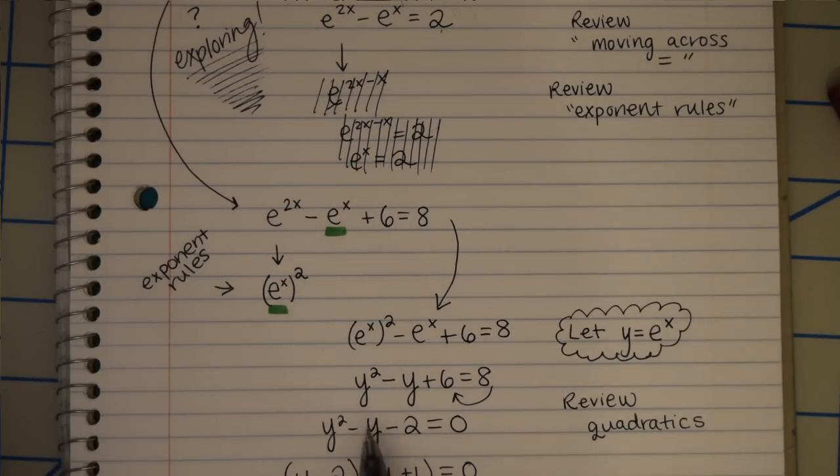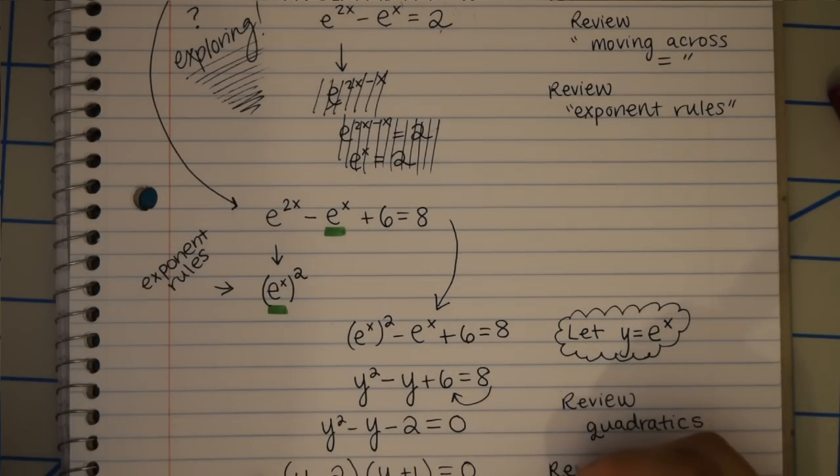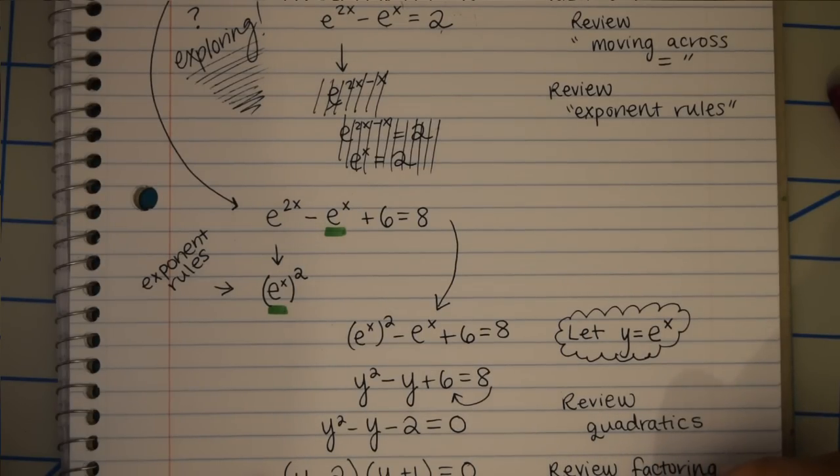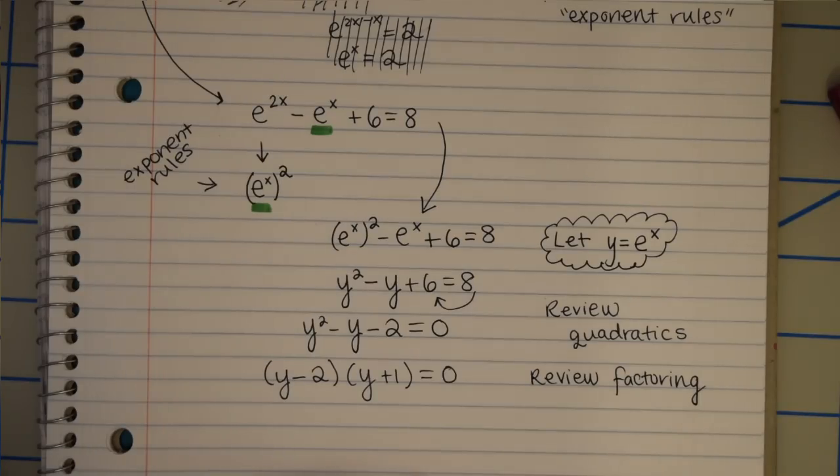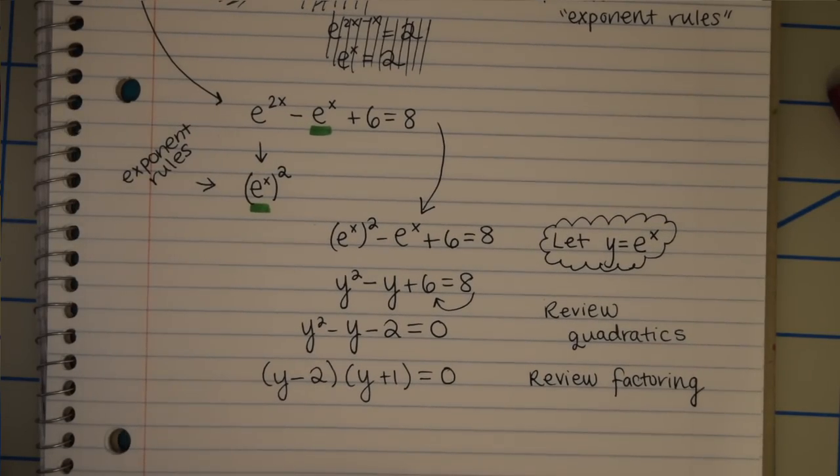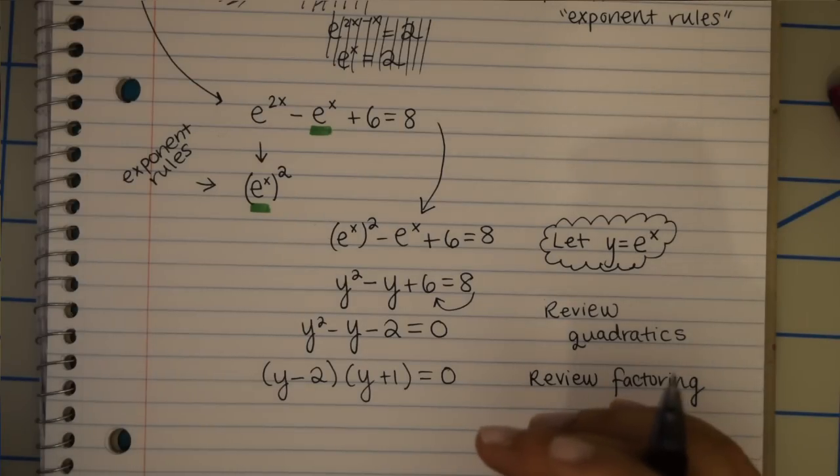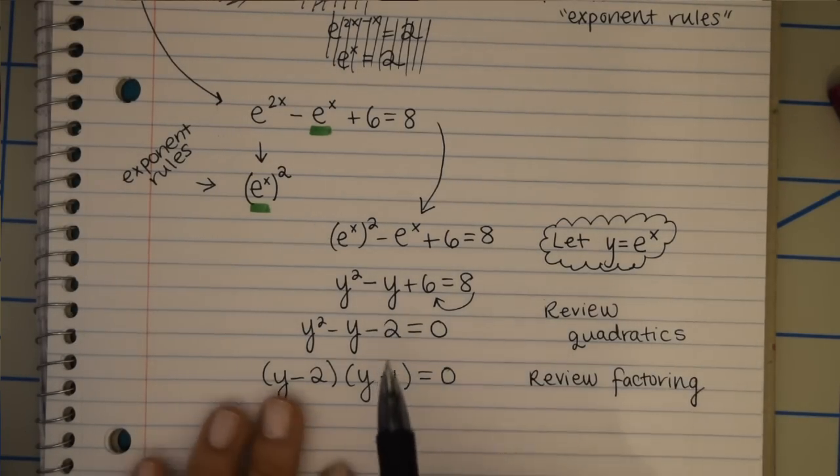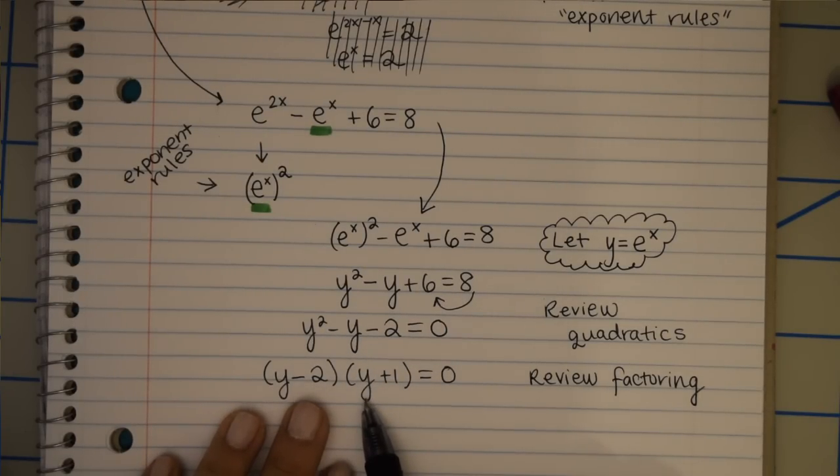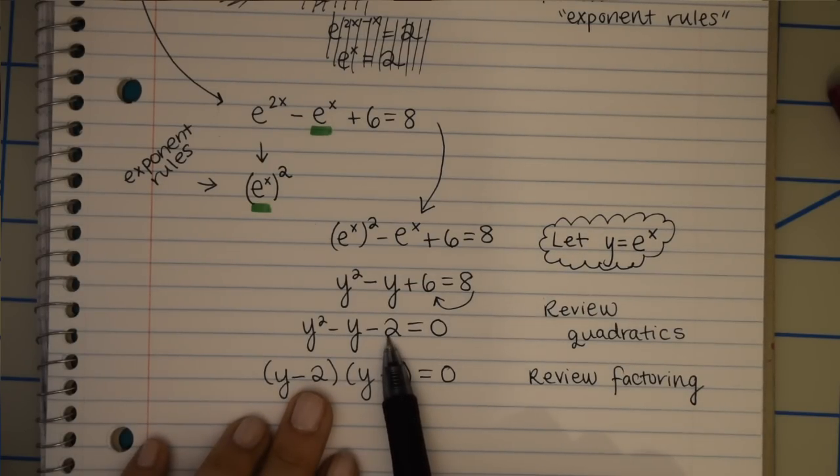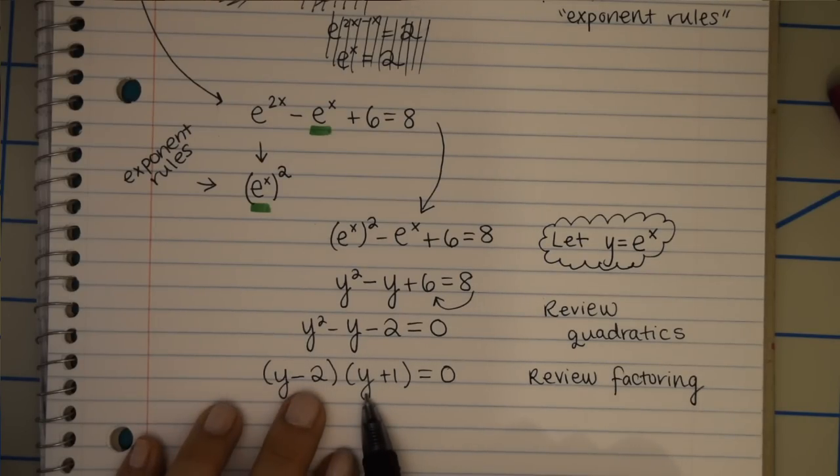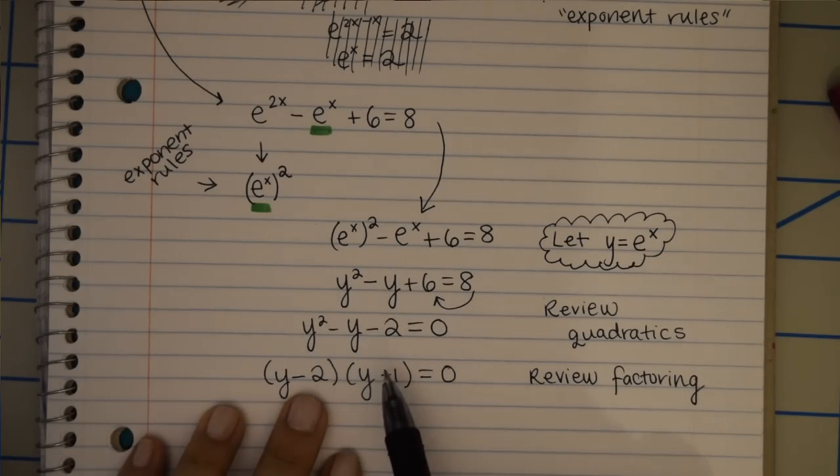So we're factoring this quadratic here. If we need to review factoring, we can. And I plan on remaking some of my older videos as well just to help keep improving the quality. But factoring is one of those videos. But this is how you factor this. Notice that if we do first outer inner last, we'll get this negative 2 and 1 multiplied to be negative 2. And then our outside will be y. Our inside is minus 2y. And y minus 2y is minus y.